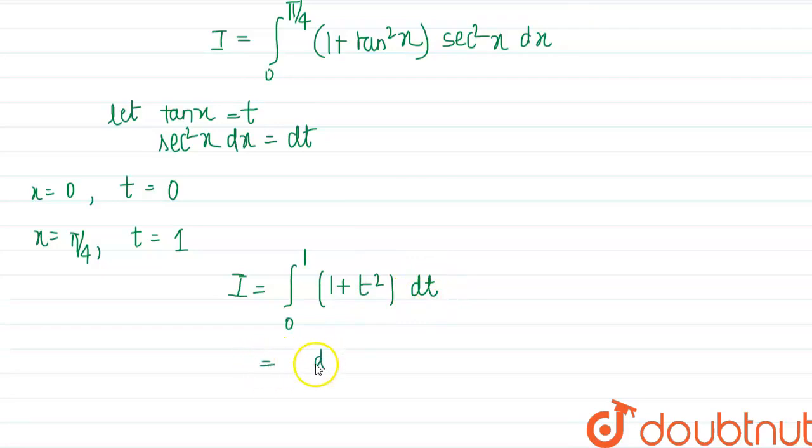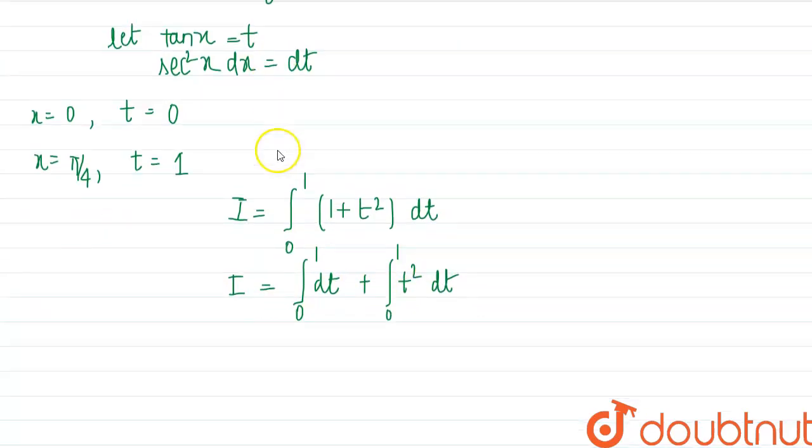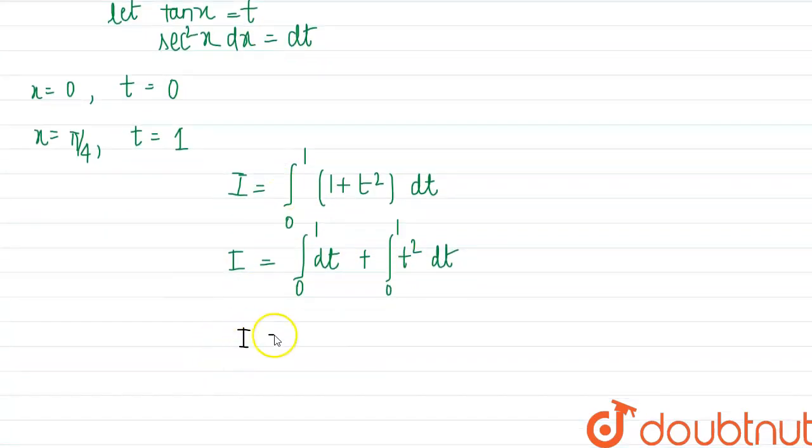So the integral will become dt 0 to 1. So integral of dt is t 0 to 1 plus t cube by 3, 0 to 1.